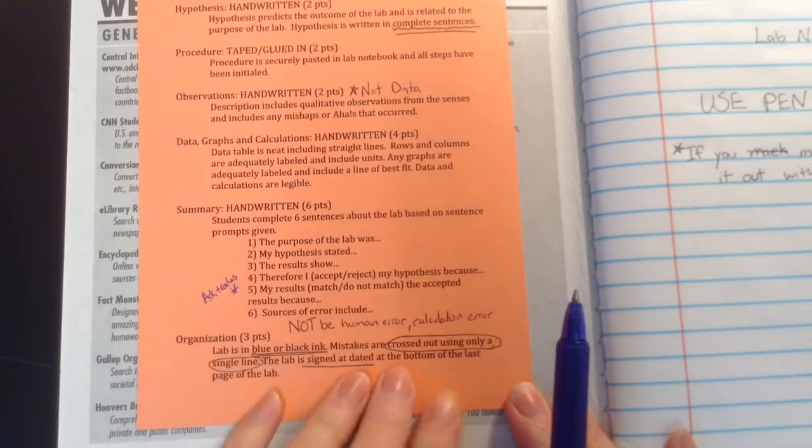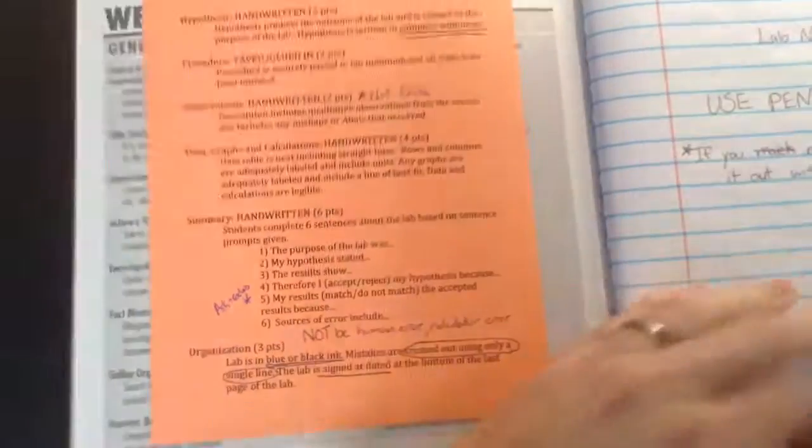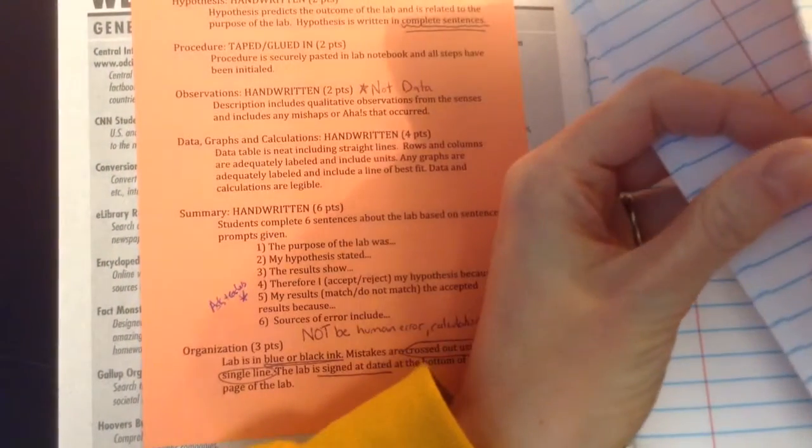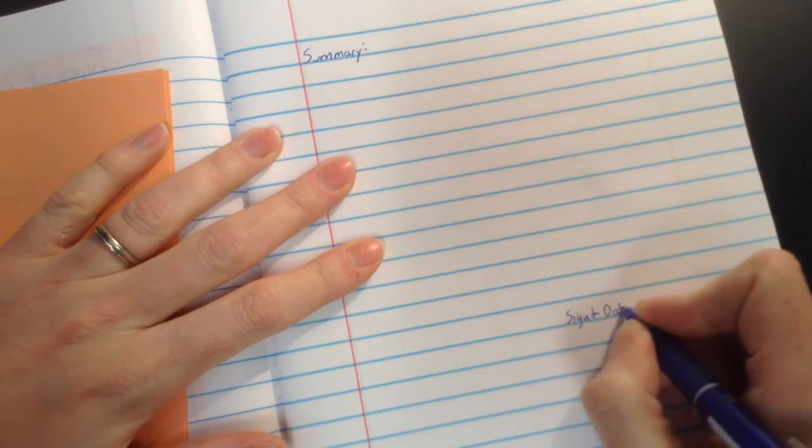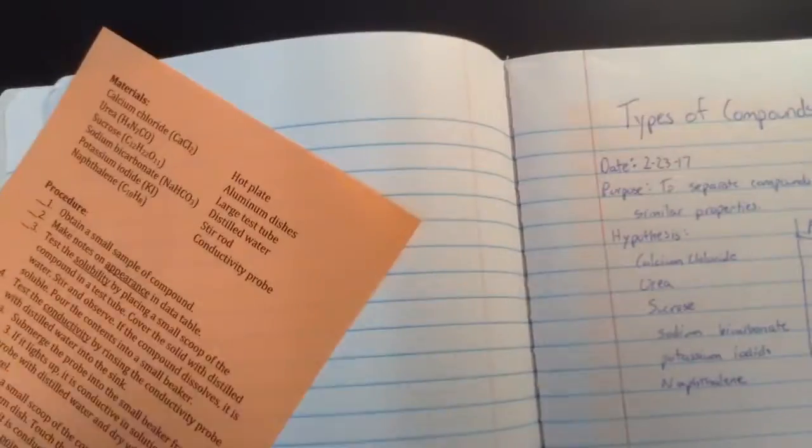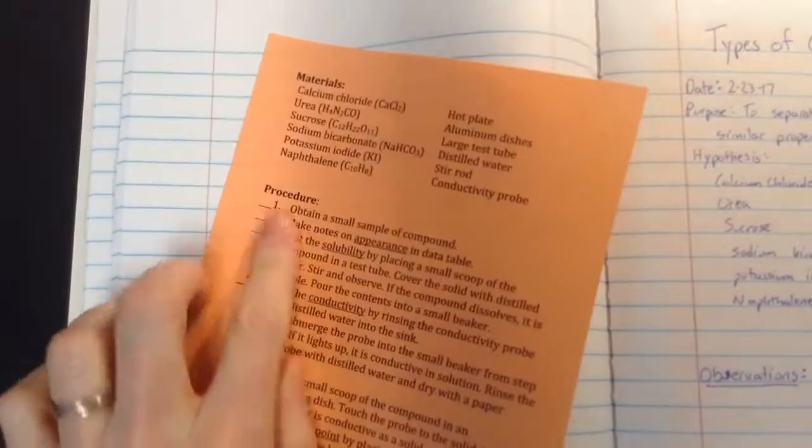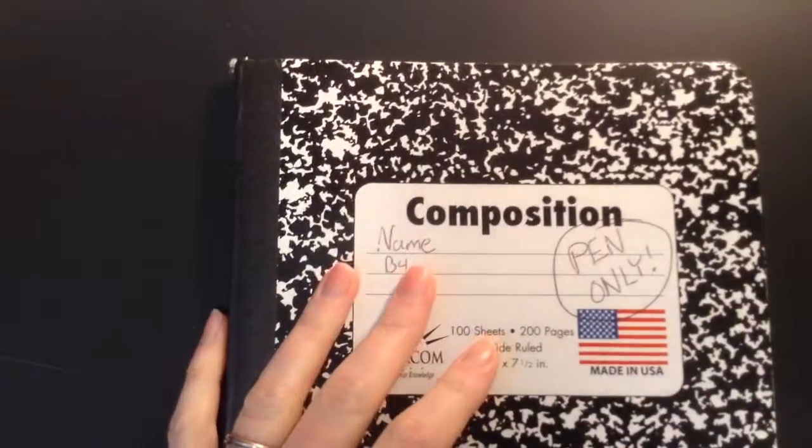Remember, blue or black ink only and cross out mistakes with a single line. Don't forget to sign and date it. In fact, that might be a good thing to write down underneath where we wrote summary that when you're done writing that you need to sign and date it right there. When you're done, take pictures of all the pages including the procedure that you checked off because there's points for that. Alright, so get started. Let your teacher know if you have any questions. Thanks for watching.